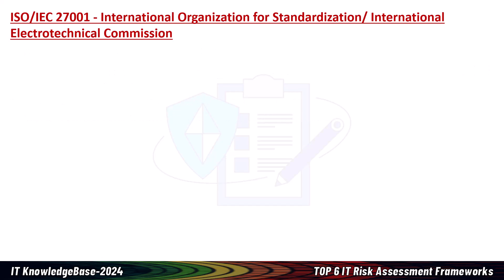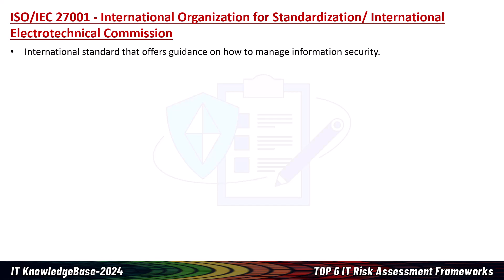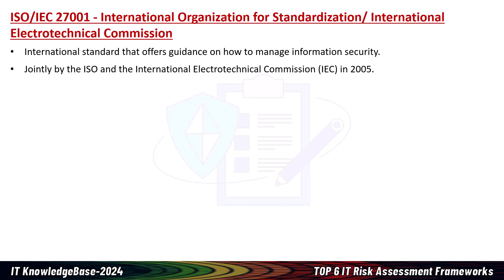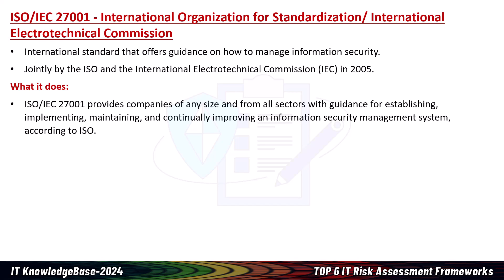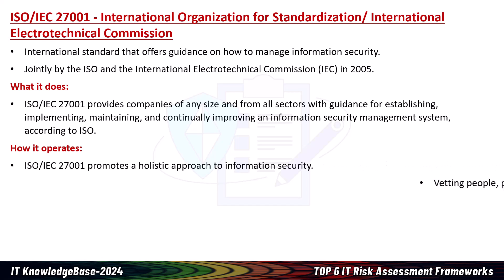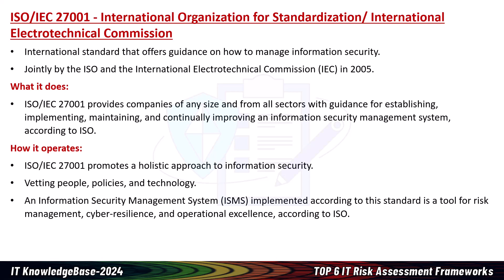Number three: ISO/IEC 27001 — the International Organization for Standardization — is an international standard that offers guidance on how to manage information security. It was originally published jointly by the ISO and the International Electrotechnical Commission, or IEC, in 2005 with subsequent revisions. ISO/IEC 27001 provides companies of any size and from all sectors with guidance for establishing, implementing, maintaining, and continually improving an Information Security Management System, or ISMS. It promotes a holistic approach to information security, including vetting people, policies, and technology, and the ISMS implemented according to this standard is a tool for risk management.